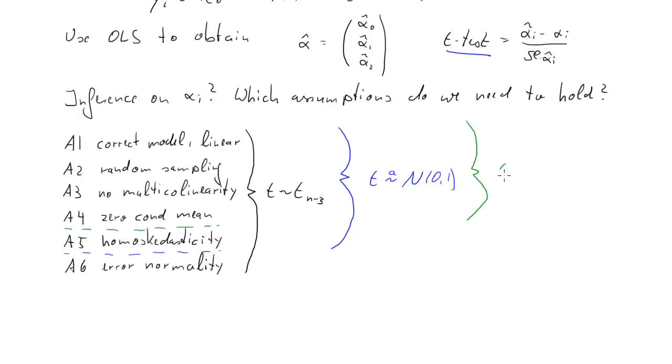If the first four hold, then the t-test is also asymptotically normally distributed, but in the t-test we need to make sure that we use robust standard errors—robust to heteroscedasticity.